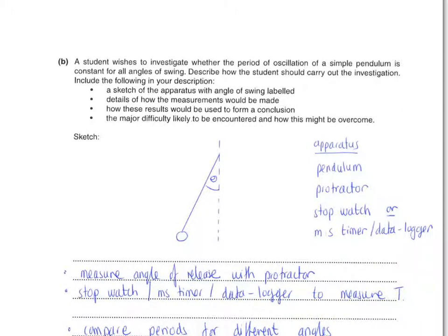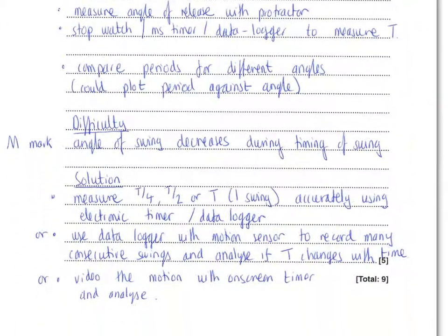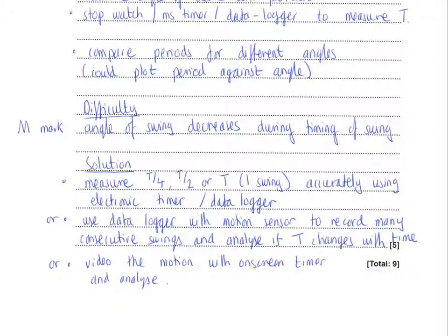The next bullet point, the final one, is a major difficulty that you would be likely to encounter, and how you might overcome it. Now, I wouldn't be surprised if many of you think about the problem when you're timing a pendulum, that one time period is a very short period of time. And so it can be difficult to measure that accurately. To some extent, access to data loggers and millisecond timers can override that problem. But it's also not what this question is really looking for. It's not specific enough to the context of what you've been asked to investigate.